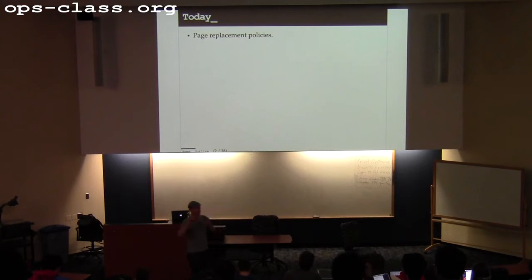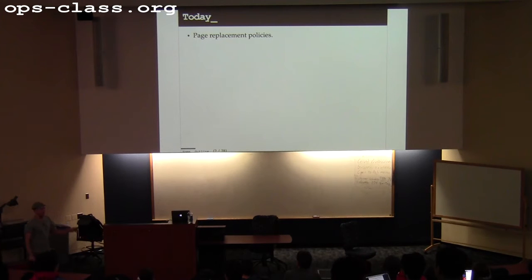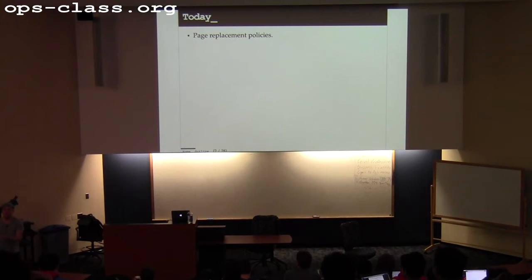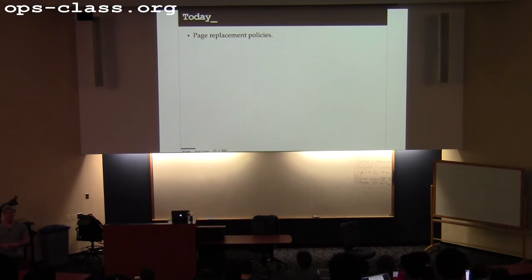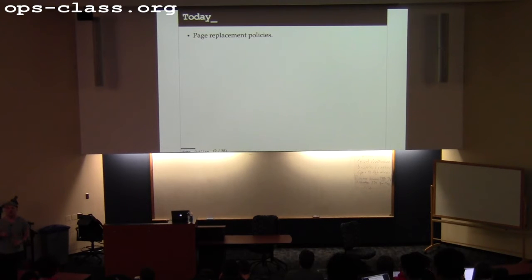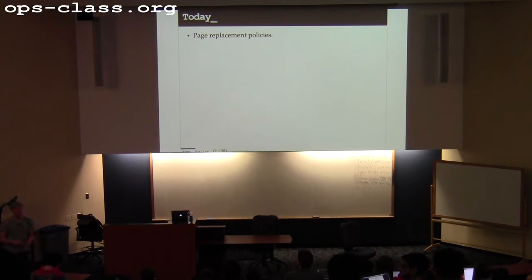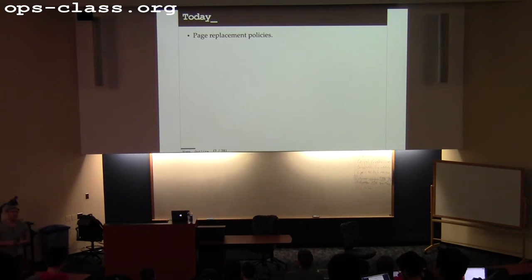So today we're going to finish — we'll see how far we get, might end a little early. We're going to finish talking about virtual memory. As we did with the CPU, we've come sort of up the stack: talked about mechanisms that hardware provides, talked a little bit about how operating systems use those mechanisms, and now we're at the point where we're going to talk about policies that govern how various decisions are made that affect the overall performance of the system. You guys know the mechanisms used to implement virtual memory and swapping, which we talked about last time.